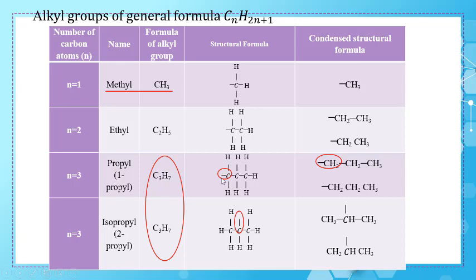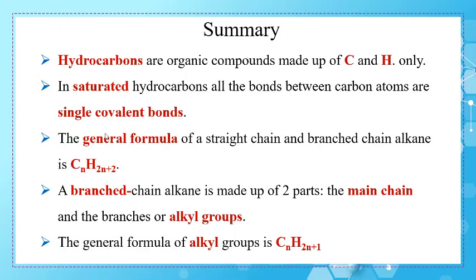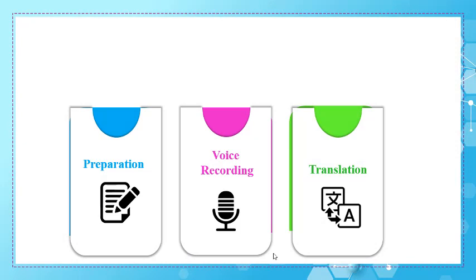As a summary: hydrocarbons are organic compounds made up of carbon and hydrogen only. In saturated hydrocarbons, all bonds between carbon atoms are single covalent bonds. The general formula for alkanes is CₙH₂ₙ₊₂. A branched chain alkane is made up of the main chain and branches called alkyl groups, which have the general formula CₙH₂ₙ₊₁. Make sure to memorize the names of the first 10 alkanes and the alkyl groups. Thanks for watching!